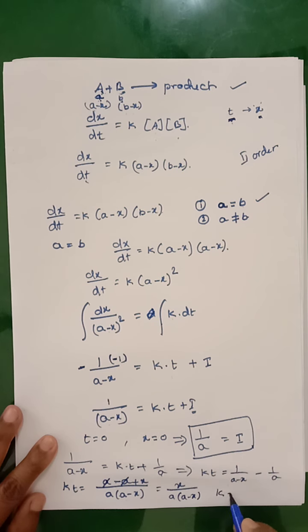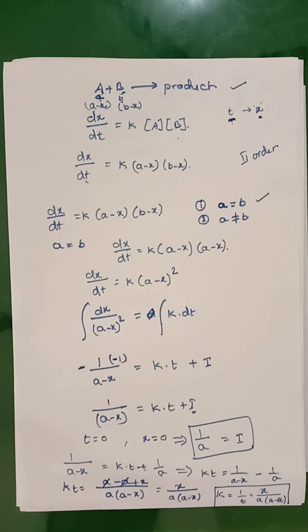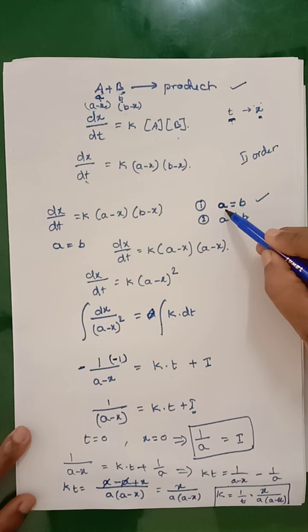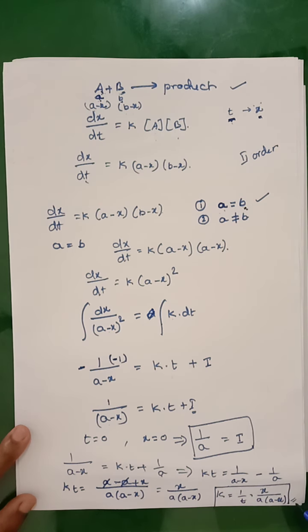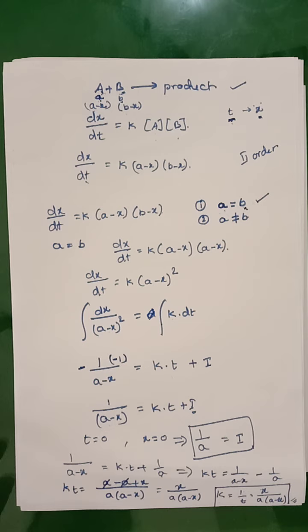Finally, we get: k = (1/t) · x / [a(a − x)]. This is the integral form of rate expression for a second order reaction under the condition that small a equals small b — that is, when the initial concentrations of both reactants are equal.